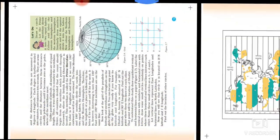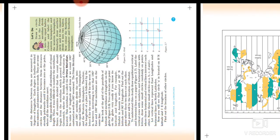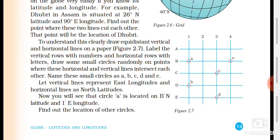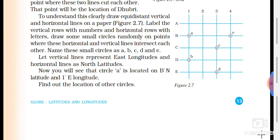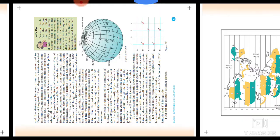From this picture we can see that the standing lines are the longitudes and the sleeping lines are the latitudes, and we can identify a point as, for example, B degrees north latitude and 1 degree east longitude. Similarly, you can try to locate the other circles.